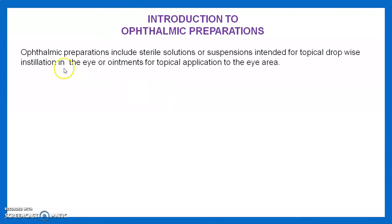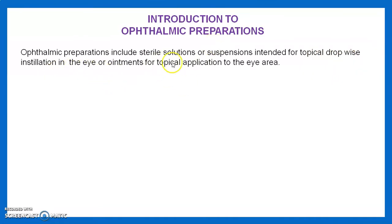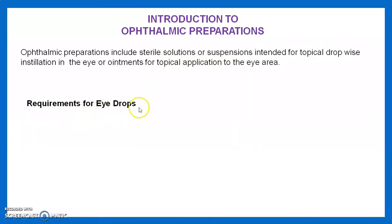What are ophthalmic preparations? Ophthalmic preparations include sterile solutions or suspensions intended for the topical drop-wise installation in the eye, or ointment for topical application into the eye area. Let us see the requirements for eye drops or eye ointment.